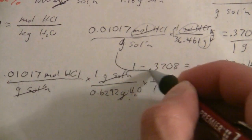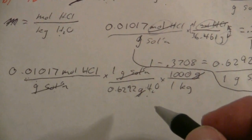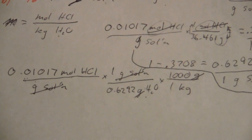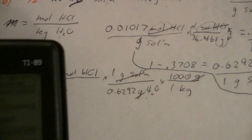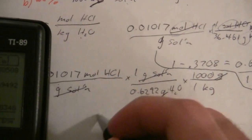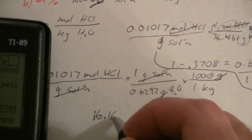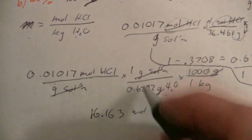So this is getting a little crowded here, but we do this calculation, and what we end up with is 0.01017 divided by the 0.6292 times 1,000, and we have 16.163 moles of HCl.